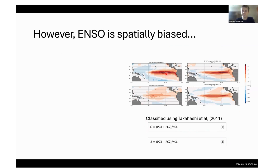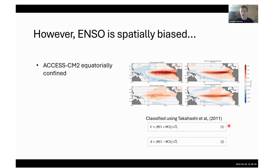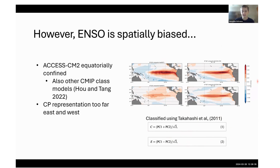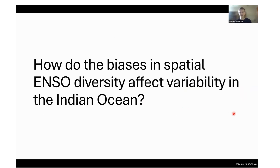Here we've plotted on the top row a composite of East Pacific ENSO events and on the bottom row, Central Pacific. On the left is HadSST, and on the right is ACCESS CM2, classified using a PC1/PC2 method. We can see that ACCESS CM2 is quite equatorially confined — a common bias across CM2-class models — and that the CP El Niño events are typically too far east and west compared to observations, with anomalies that are a little bit stronger.